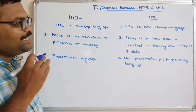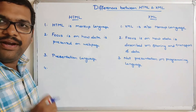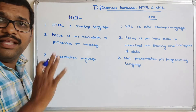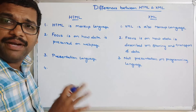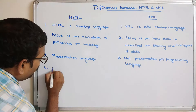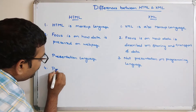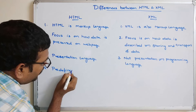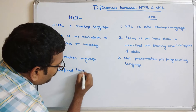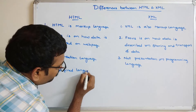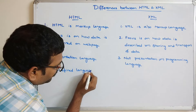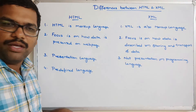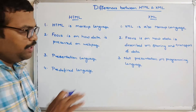HTML is a predefined language, because all the tags we use in HTML are predefined. That's why we call it a predefined language. There is no extension here — no custom tags.